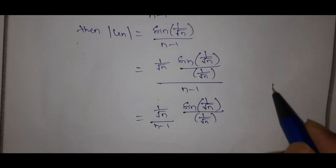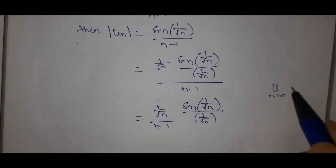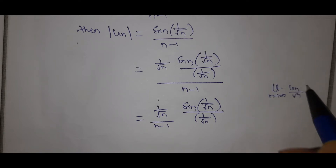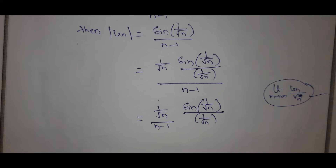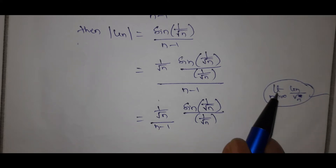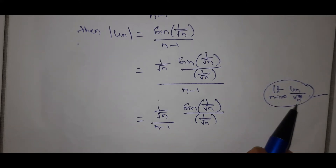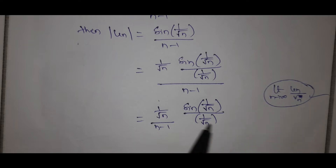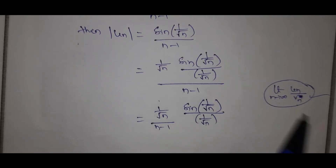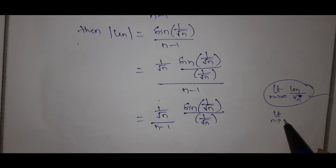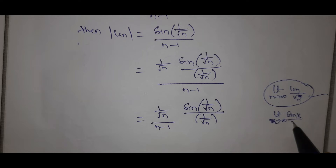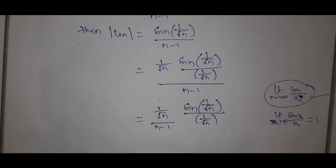We will use the limit comparison test. We compute limit as n tends to infinity of |u_n| / v_n. We will use the standard result: limit as x tends to infinity of sin(x)/x equals 1.